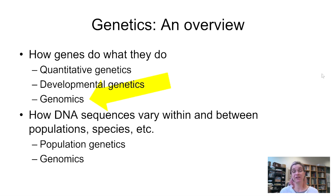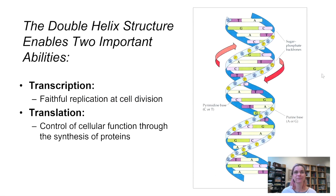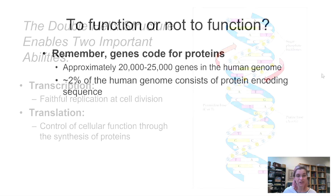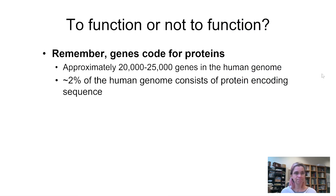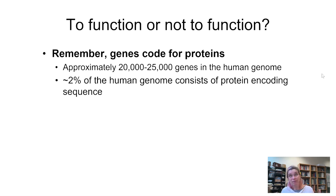Genomics can also be used to study how genes do what they do. You've already refreshed your memory on transcription and translation, so now we'll think about DNA sequence in terms of whether or not it's being translated into a protein. Remember: genes code for proteins. There are approximately 20,000 to 25,000 genes in the human genome, and thinking about the 3.2 billion base pairs, that means only about two percent of the human genome consists of protein-coding sequence.